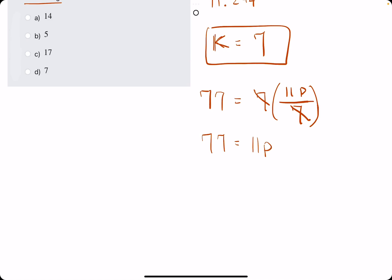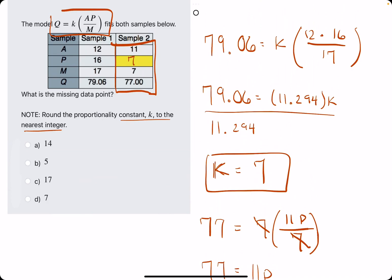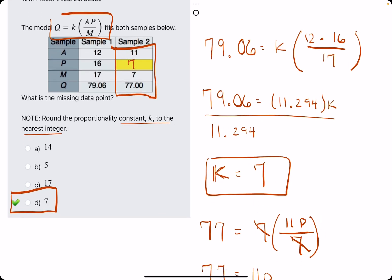And then to solve for P or get P by itself, we'll just divide by 11. And it turns out that P is also equal to 7 for Sample 2. So we see that D is our answer.